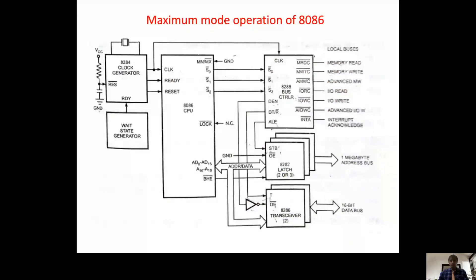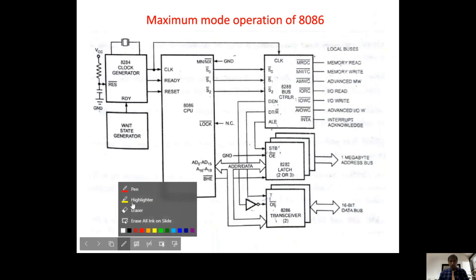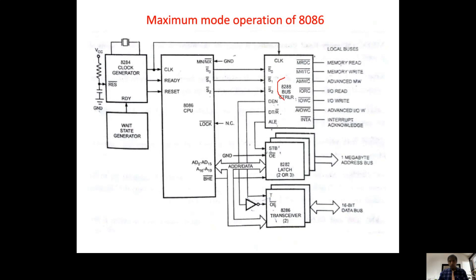Now I am sharing the maximum mode operation of 8086. There is one external bus controller named 8288. This acts like a slave, and the 8086 microprocessor gives commands to 8288 via three pins: S0 bar, S1 bar, and S2 bar. With the help of these three pins, 8086 gives commands to 8288 about which operation to perform.